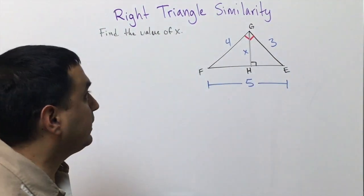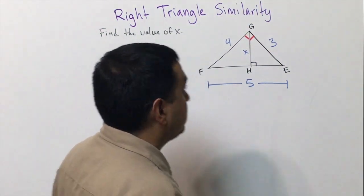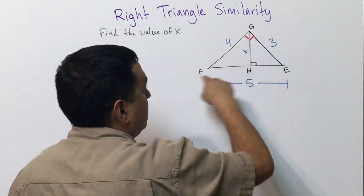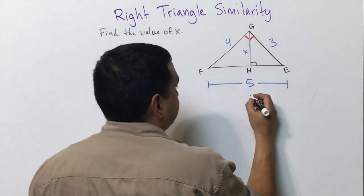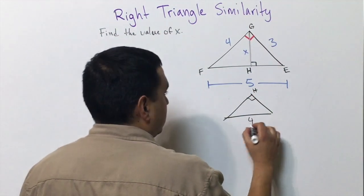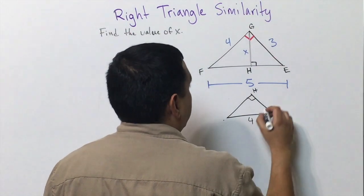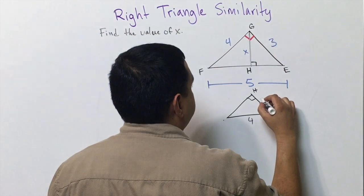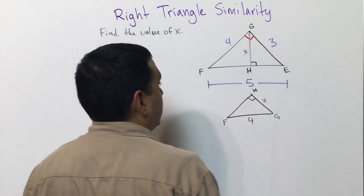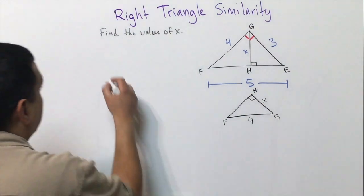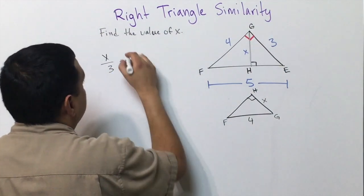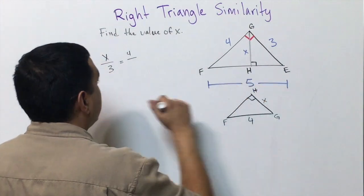These sides are proportional, so I'm going to draw this triangle and rotate it so it faces the same way as the other triangle. I'll put H on top, 4 goes here, and x goes here — that would be G and F after rotating. Solving the proportion: x is to 3 as the hypotenuse of 4 is to the hypotenuse of the main triangle, which is 5.